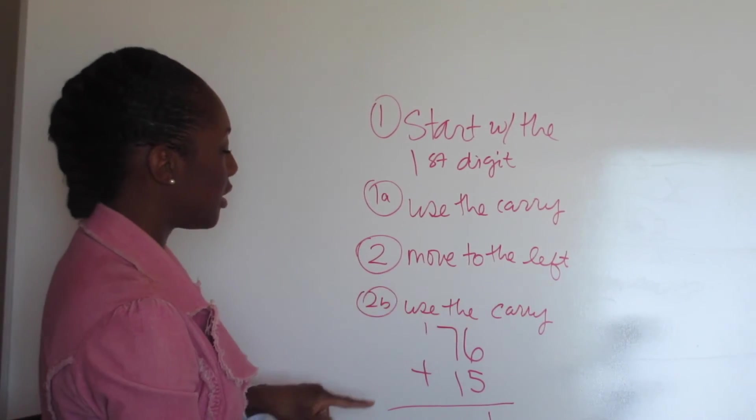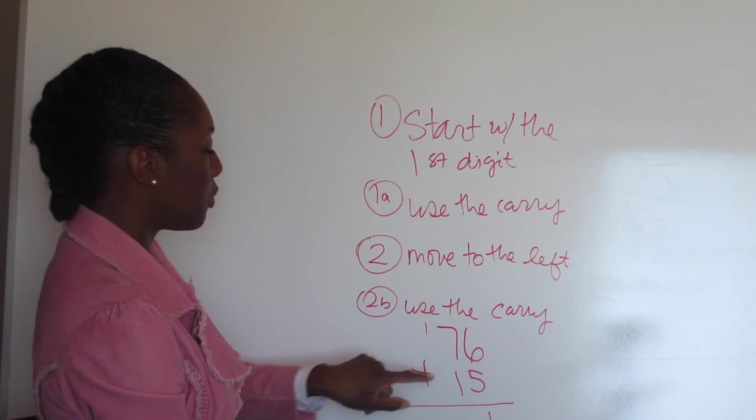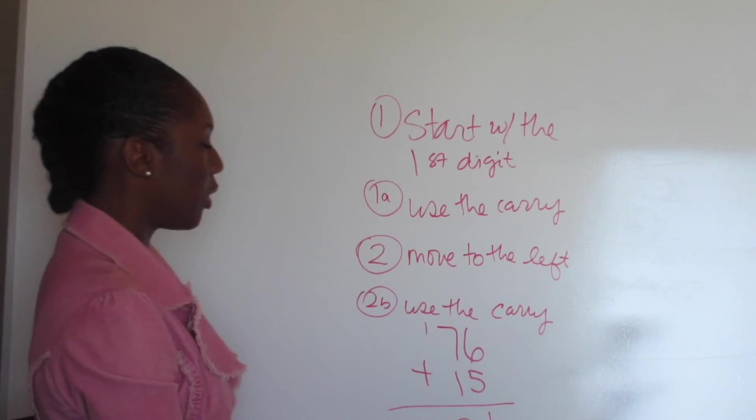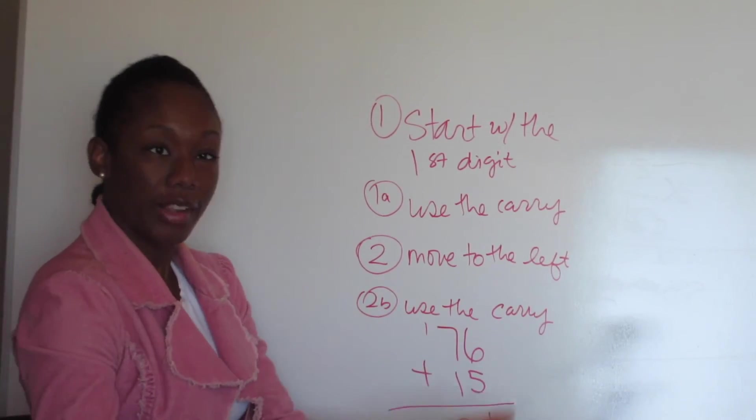Rule number 2: move to the left. Now we add up this next row. 7 plus 1 plus 1 is 9, 91. Next rule: use the carry. There's nothing to carry. Now we're done.